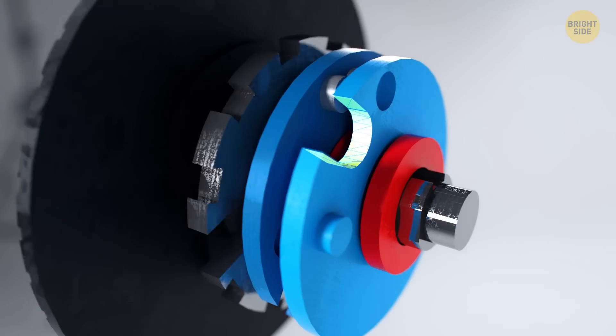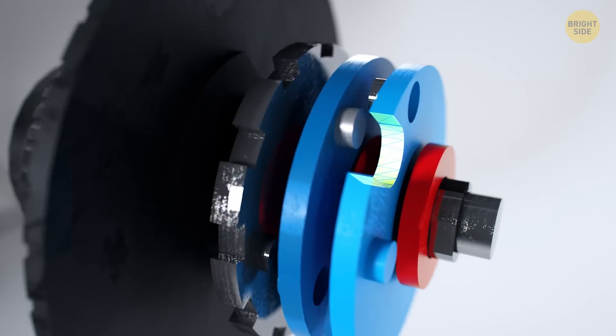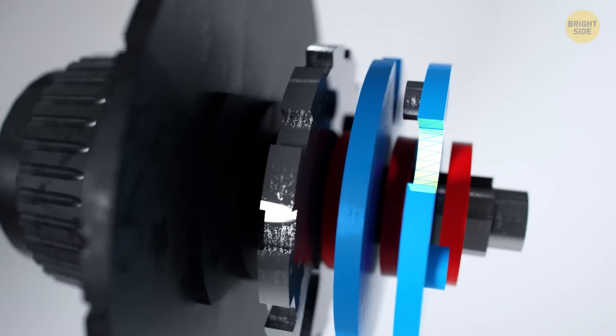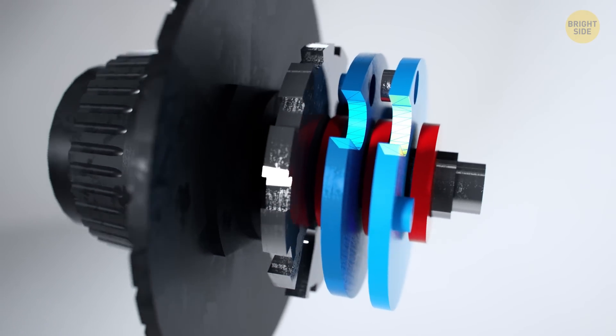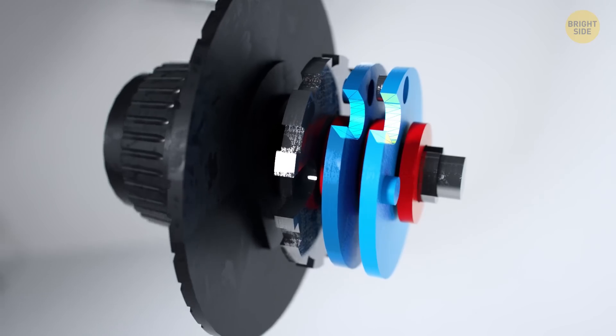Now we need to start turning the wheel in the opposite direction. Again, we do a full circle so that the teeth of the first disc can engage the second one. When they move together, we spin them to the second number of the combination, 10. Done.